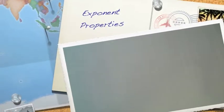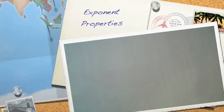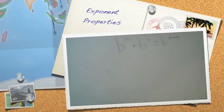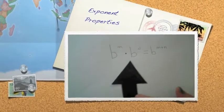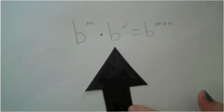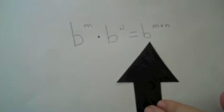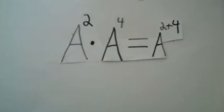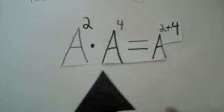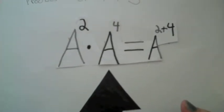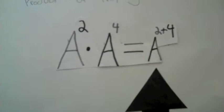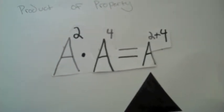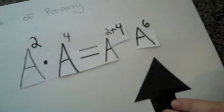The product of powers property says that b to the m times b to the n equals b to the m plus n. For example, a squared times a to the fourth equals a to the second plus four, which also equals a to the sixth.